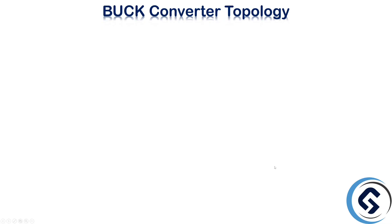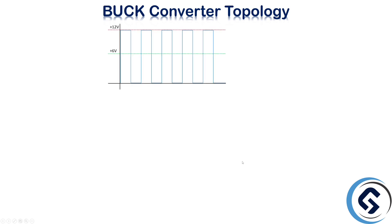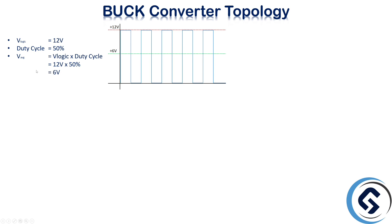Before we talk about the Buck Converter, the only thing we need to understand is how a PWM signal looks like. We are using a PWM signal where the logic level is +12V and the duty cycle is 50%. Every PWM signal has an average voltage based on its duty cycle, logic level, and frequency. The way to calculate the average voltage is by multiplying the logic level voltage and duty cycle. Here, +12V multiplied by 50% gives us +6V. So we can say the average voltage of this PWM signal is +6V.